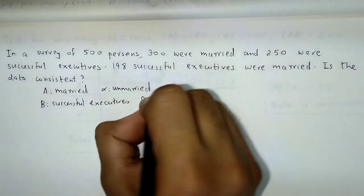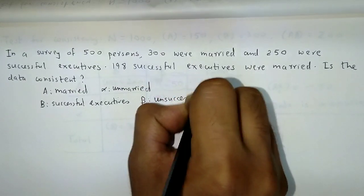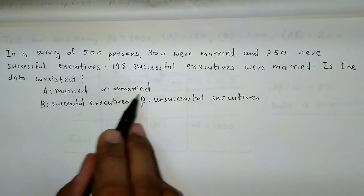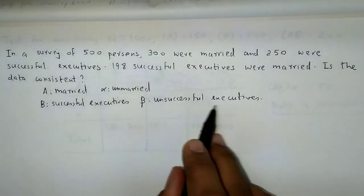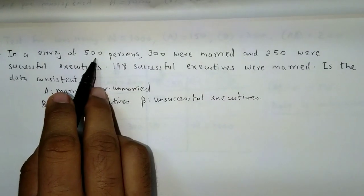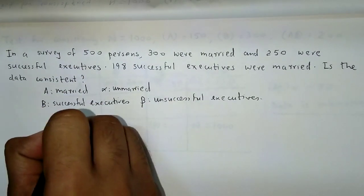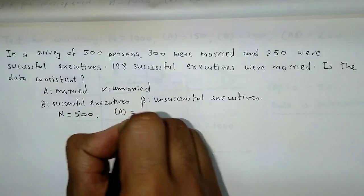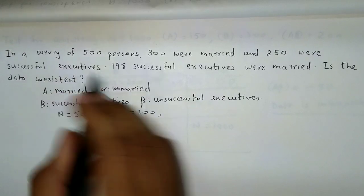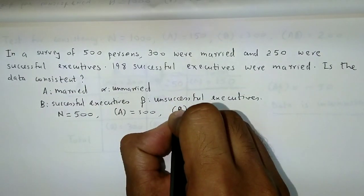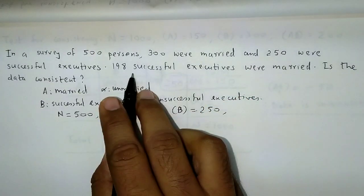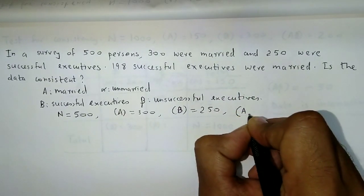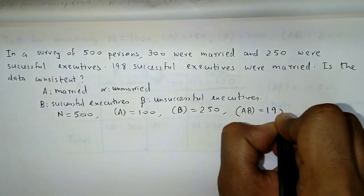And beta would be its opposite — unsuccessful executives. So to summarize: A is married, alpha is unmarried, B is successful executives, and beta is unsuccessful executives. From the problem: n equals 500, frequency of A is 300, frequency of B is 250, and frequency of AB — married successful executives — is 198.